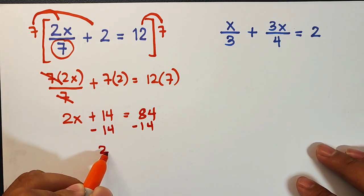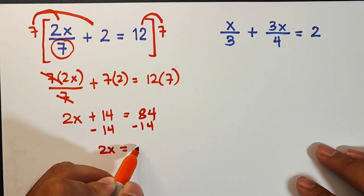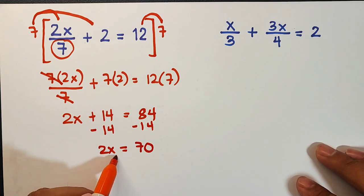Then equal to 84 minus 14, and the answer is 70. So divide both sides by 2.